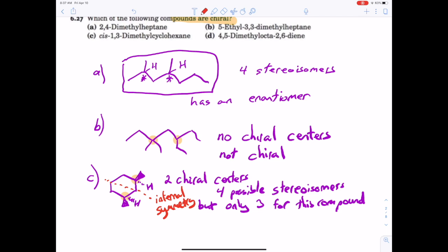And so this is the meso form. This particular stereoisomer has no enantiomer, therefore not chiral.